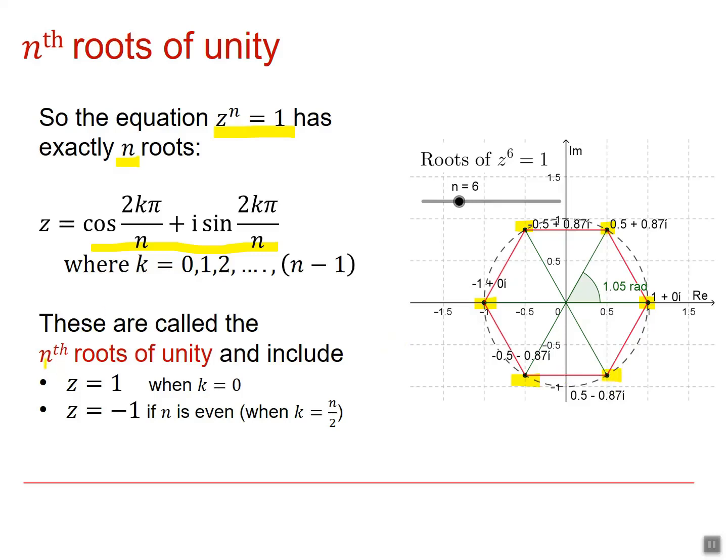These roots are called the nth roots of unity and always include z equals 1, that's when k equals 0, and they always include z equals minus 1 provided n is even. And that will happen when k is equal to n over 2. So in our example, we've got six roots and we get our minus 1 root at k equals 3.